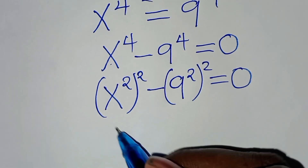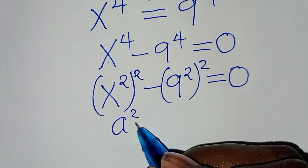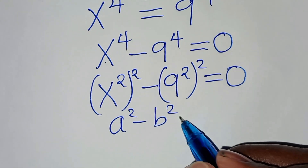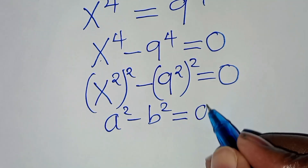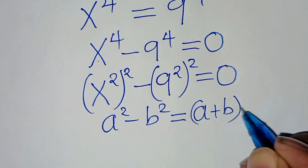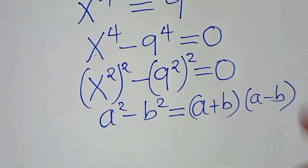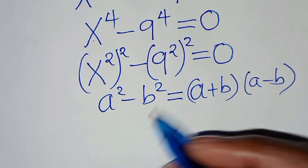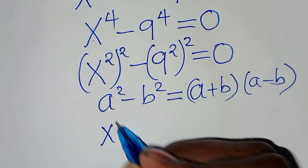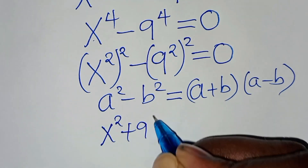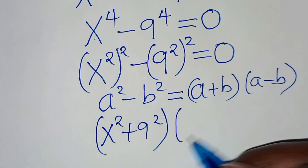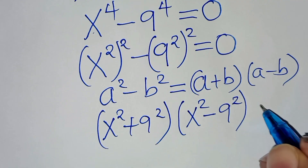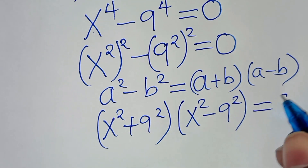This equation is in the form of a squared minus b squared, which is the difference of two perfect squares, which we can express as (a plus b)(a minus b). Applying this identity, we have (x squared plus 9 squared) times (x squared minus 9 squared), equal to 0.